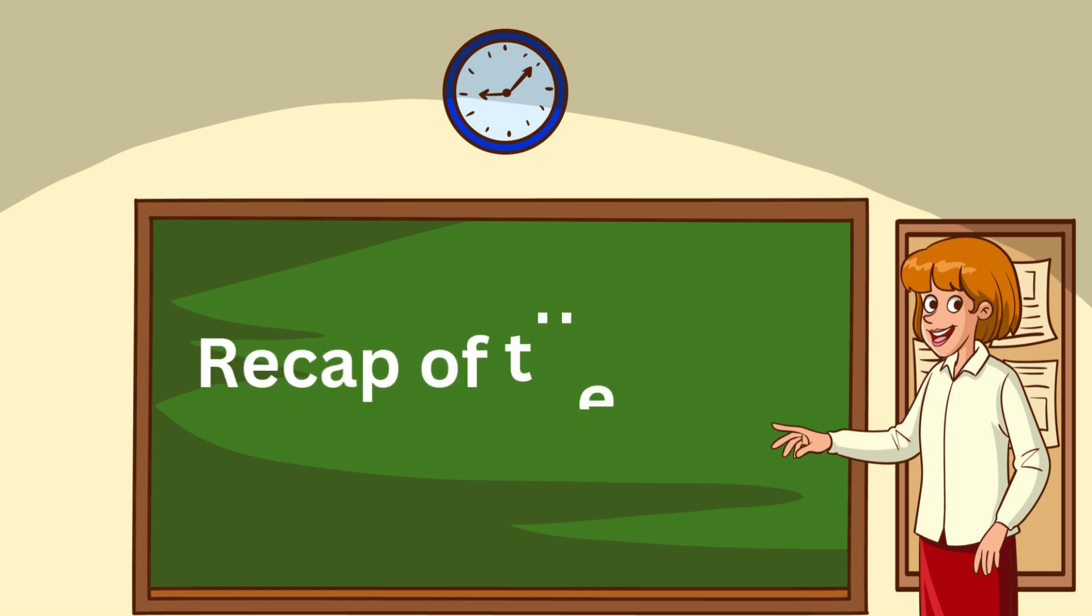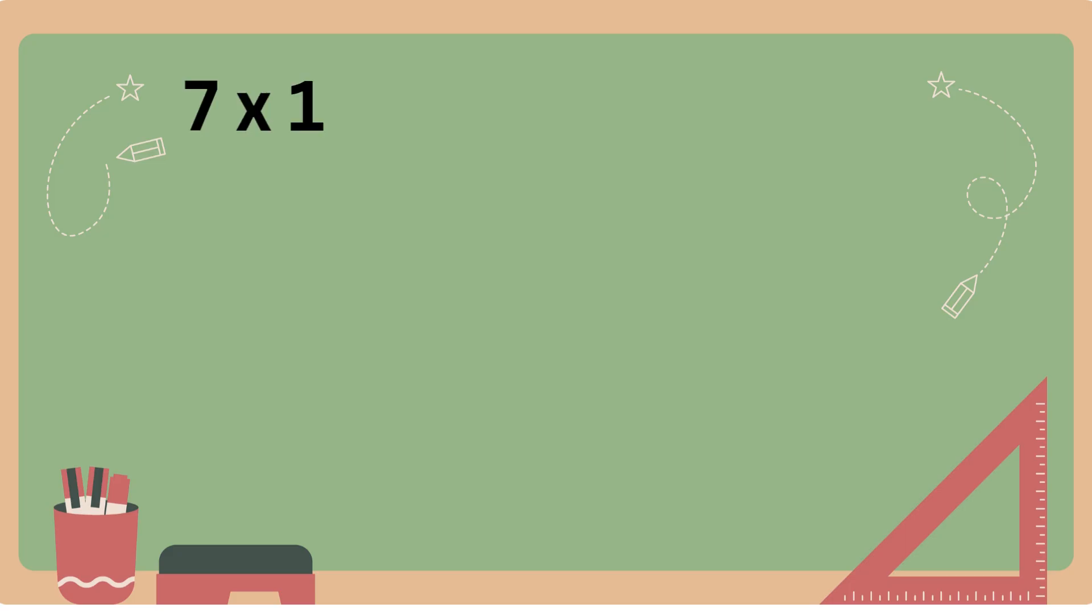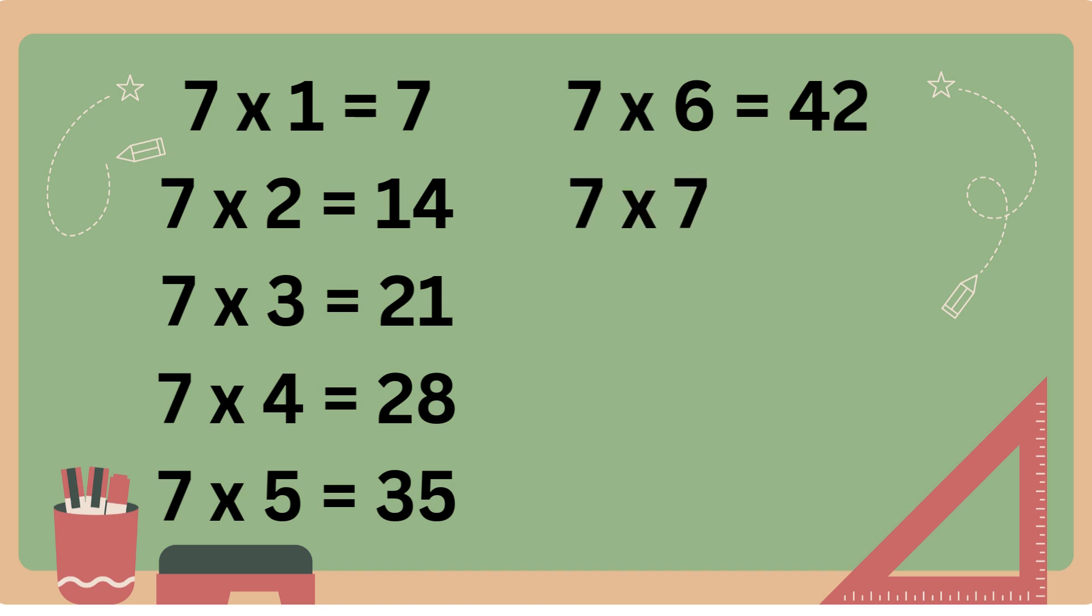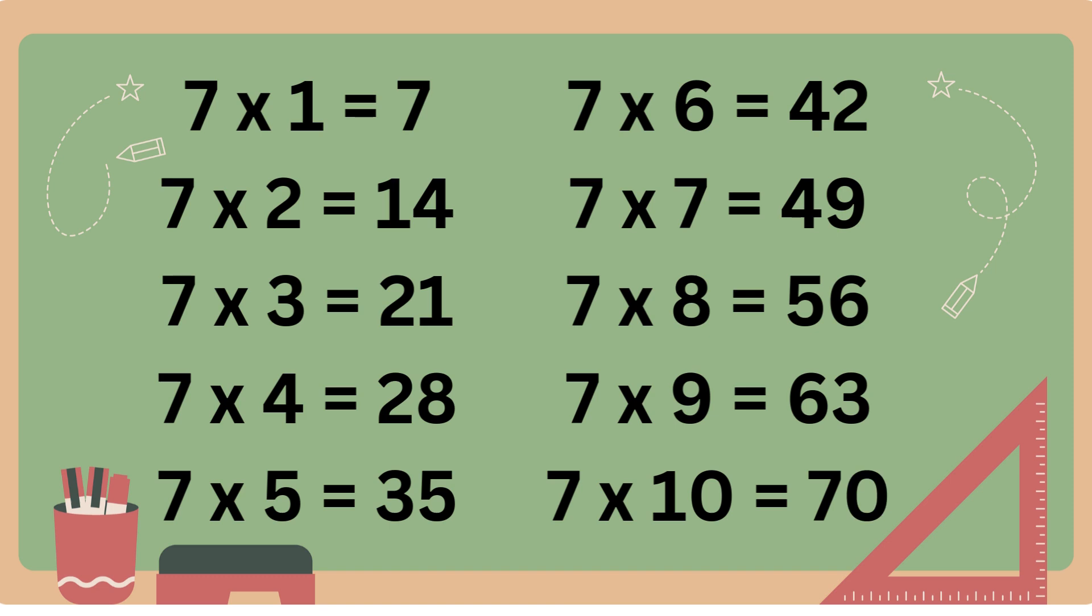Let's quickly go through the table of 7 one more time. 7 1s are 7. 7 2s are 14. 7 3s are 21. 7 4s are 28. 7 5s are 35. 7 6s are 42. 7 7s are 49. 7 8s are 56. 7 9s are 63. 7 10s are 70.